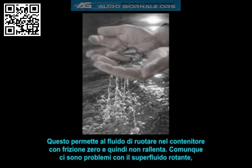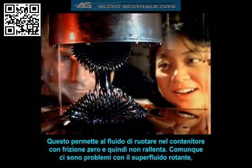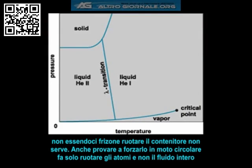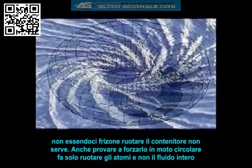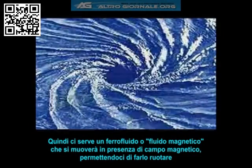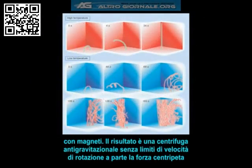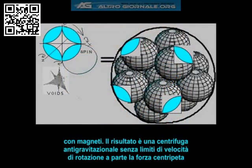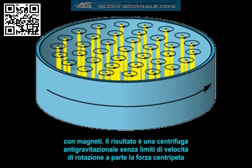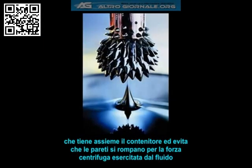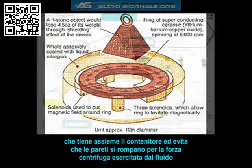The mercury-based plasma he is referring to is a superfluid ferrofluid, which is supercooled to 150 degrees Kelvin — the lambda point at which the fluid becomes a Bose-Einstein condensate. This allows the fluid to rotate around the container with zero friction, which means it never slows down. However, there are problems with rotating a superfluid because there is no friction — rotating the container does nothing. You can also try to stir it in a circle, but it only makes the atoms rotate on their individual axis rather than as a whole. This is why we need a ferrofluid — a magnetic fluid which will move in the presence of a magnetic field, allowing us to rotate the fluid using electromagnets.